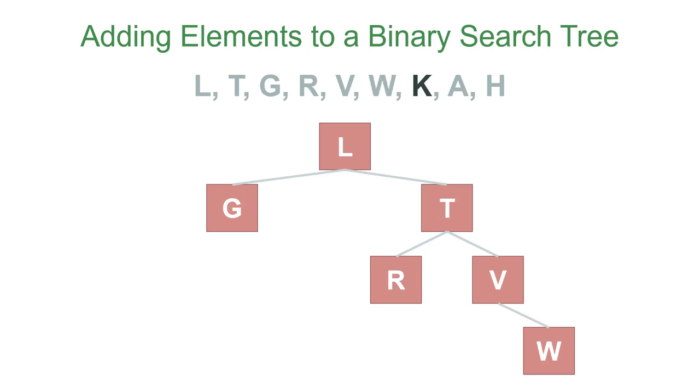K comes before L, so it'll be in the left subtree, and it comes after G, so we'll put it in G's right subtree. You'll notice each time we're adding elements, they're always added as a leaf.